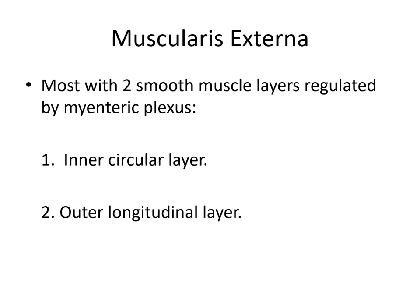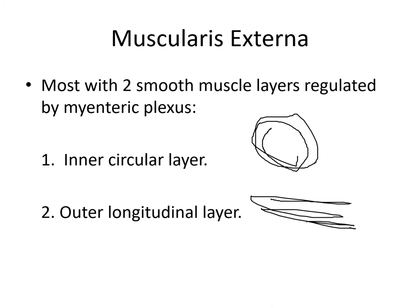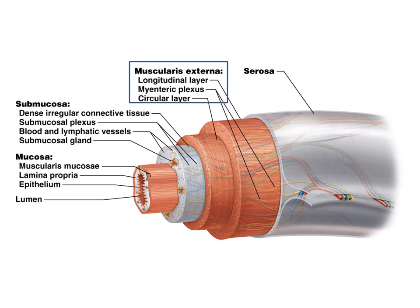There's the inner circular layer and the outer longitudinal layer. Circular meaning if you're looking at the lumen, the fibers are going this way. The outer longitudinal layer fibers are going lengthwise. Here's the tube. So we have the inner circular layer and the outer longitudinal layer.